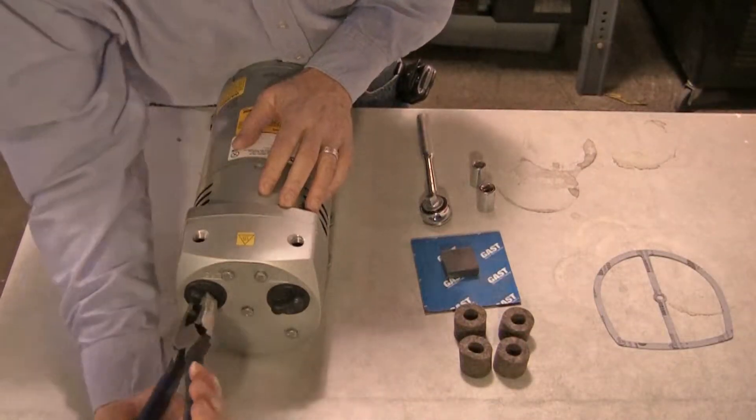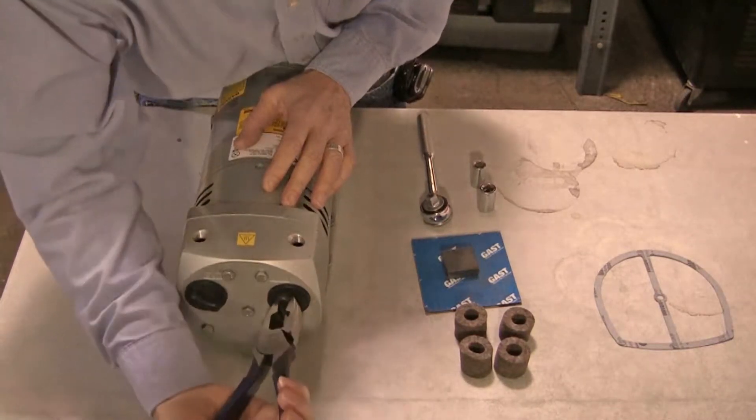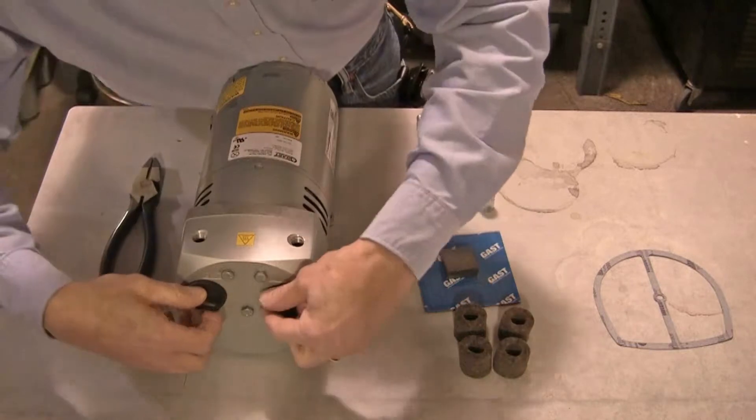Using the pliers, begin by removing the filter screws from the front of the vacuum pump. Note, these are plastic screws, avoid forcing them.